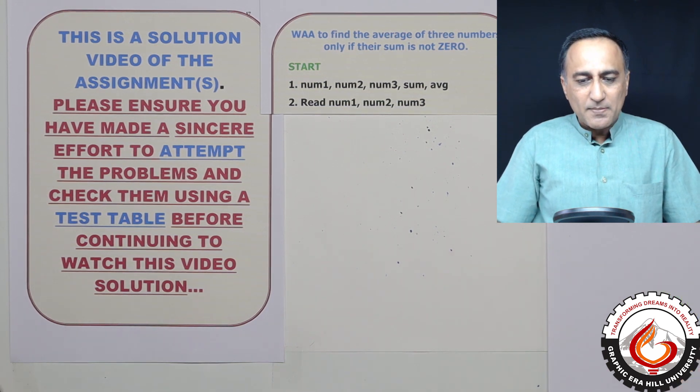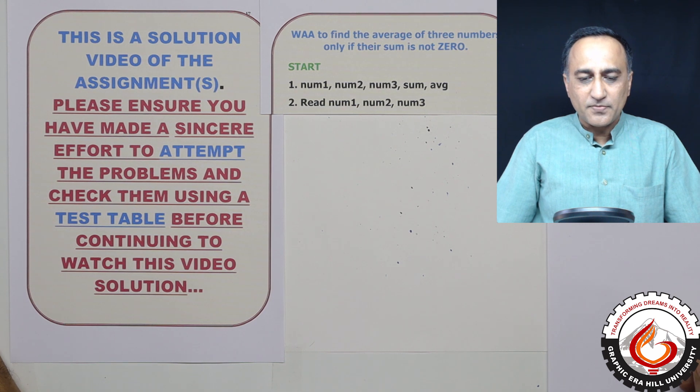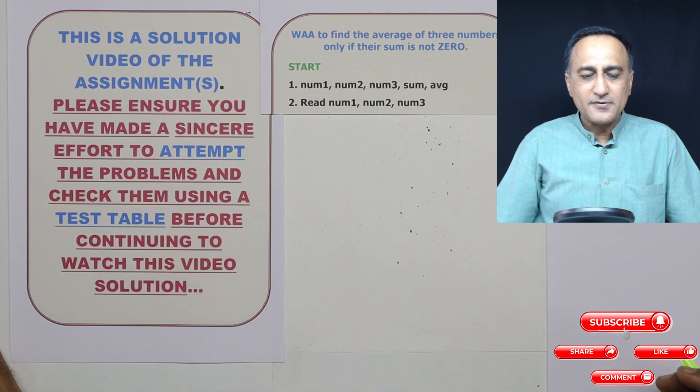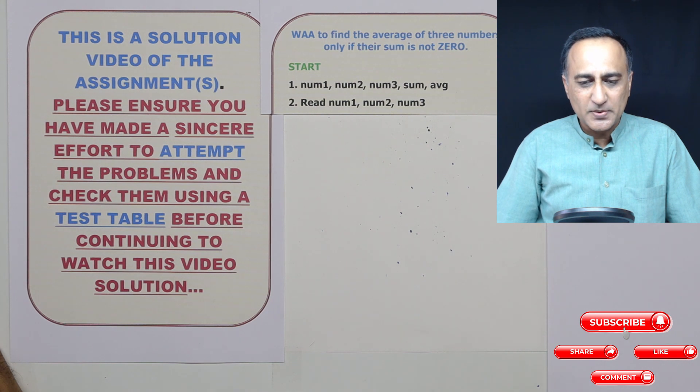In this particular problem I'm asked to find the average of three numbers only if the sum of those three numbers is not zero. In step number one, I'll identify all the variables or memory locations I require to solve this particular problem.